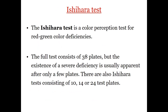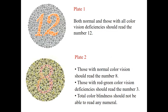The Ishihara test is used to diagnose red-green color blindness. It consists of 38 colored plates with numbers or patterns written on them to help in the diagnosis of color deficiencies. Sometimes 10, 14, or 24 of the 38 plates are used. Plate 1 is a starting plate that all people — whether with normal vision or color blindness — should read as number 12. In plate 2, normal people read it as 8, while people with green color blindness read it as 3.